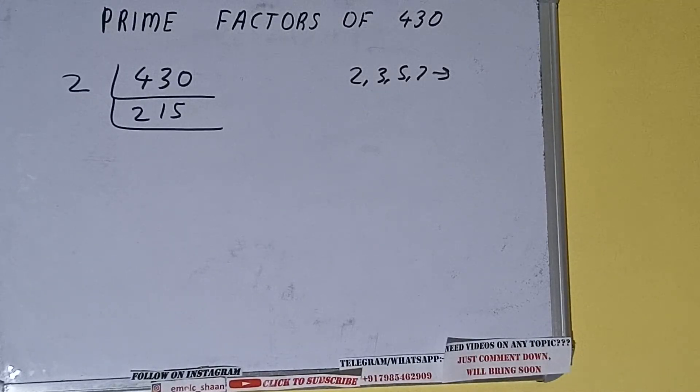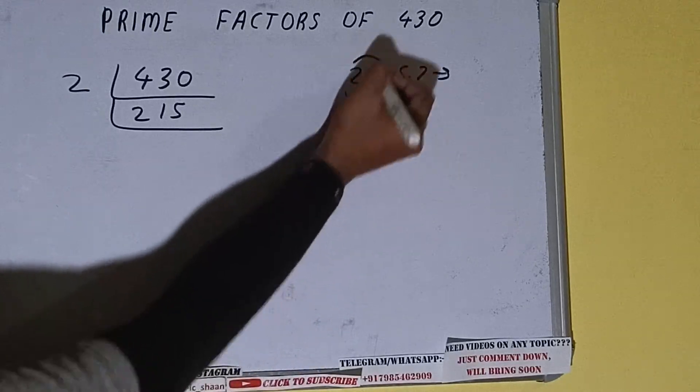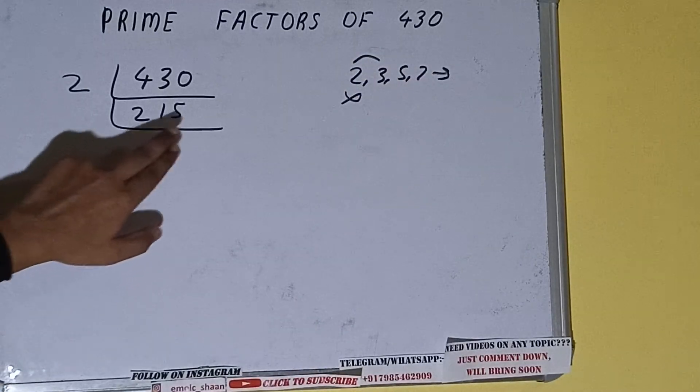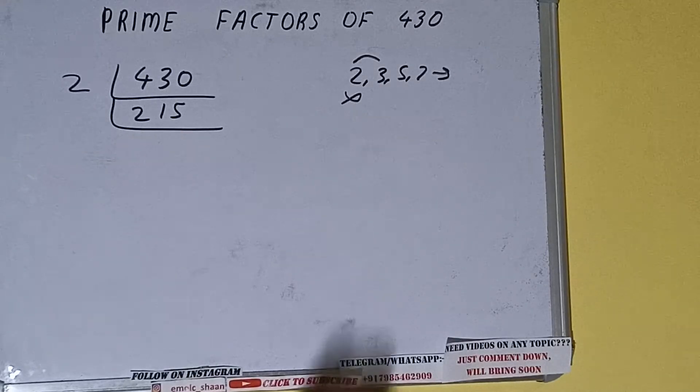So we'll be checking with the next lowest prime number, that is 3. Is it divisible by 3? We need to check. 3 sevens are 21, 3 ones are 3, 2 left. With 3 it is not divisible.